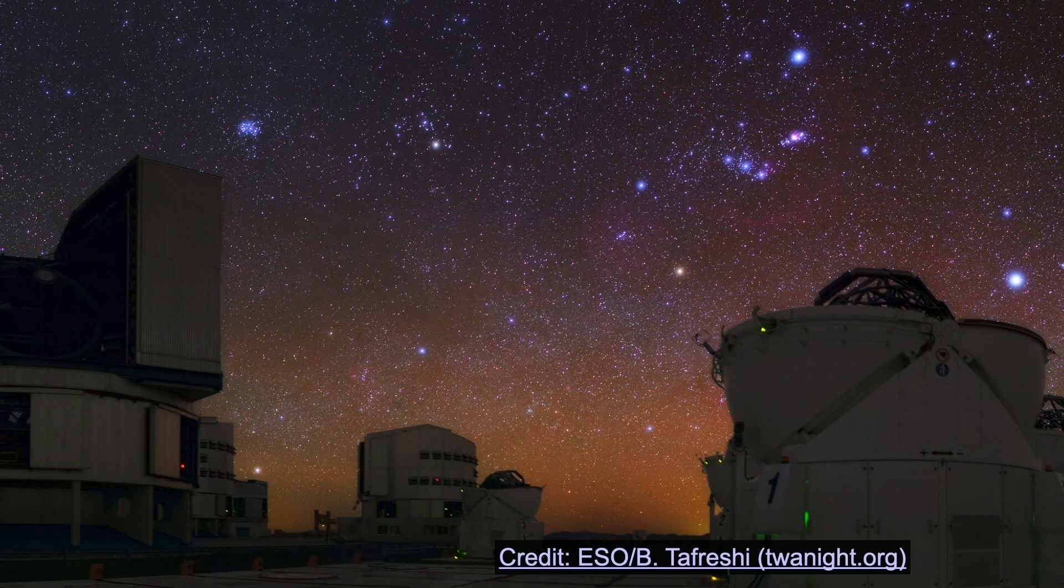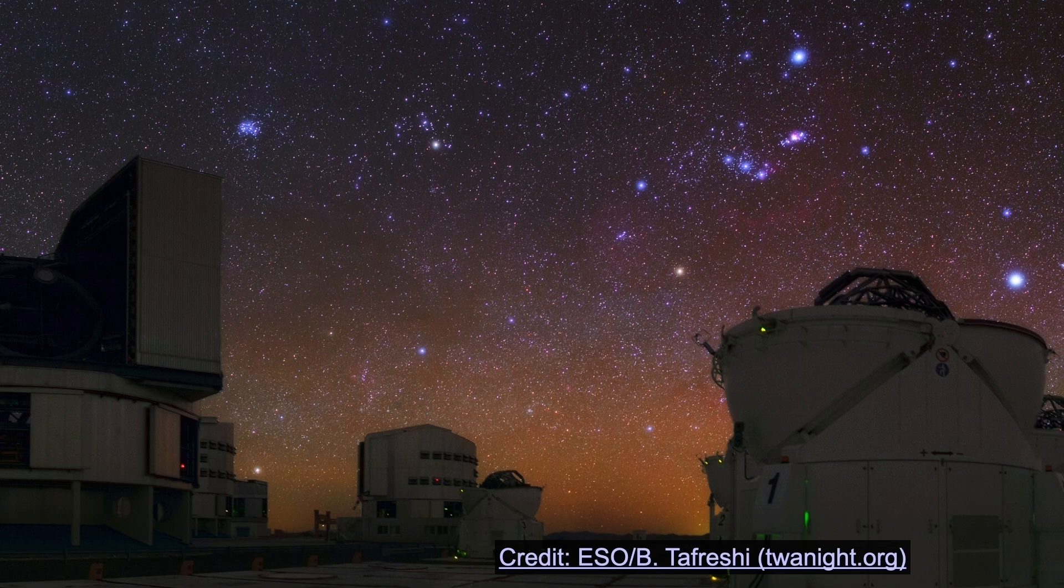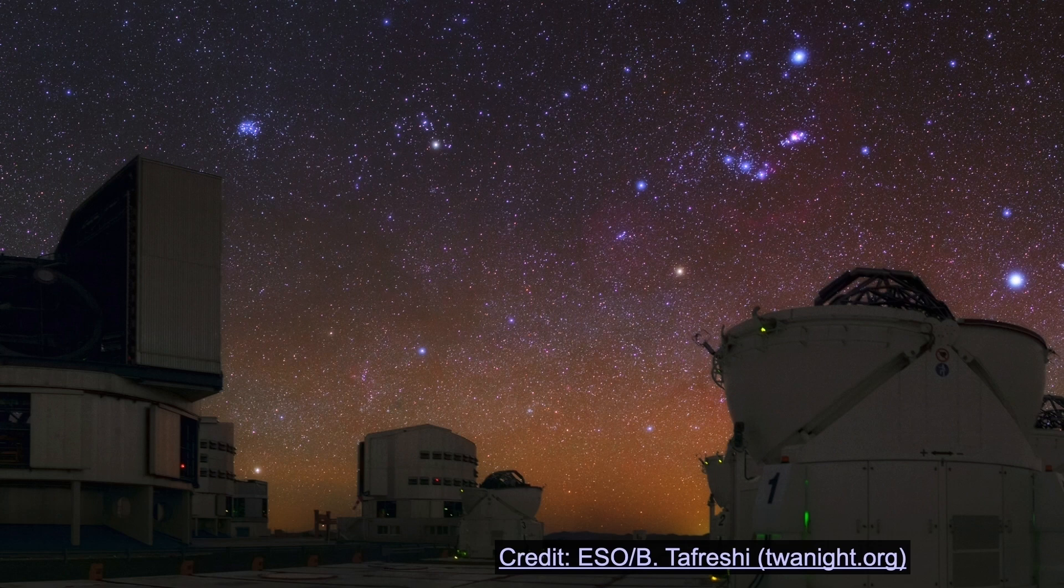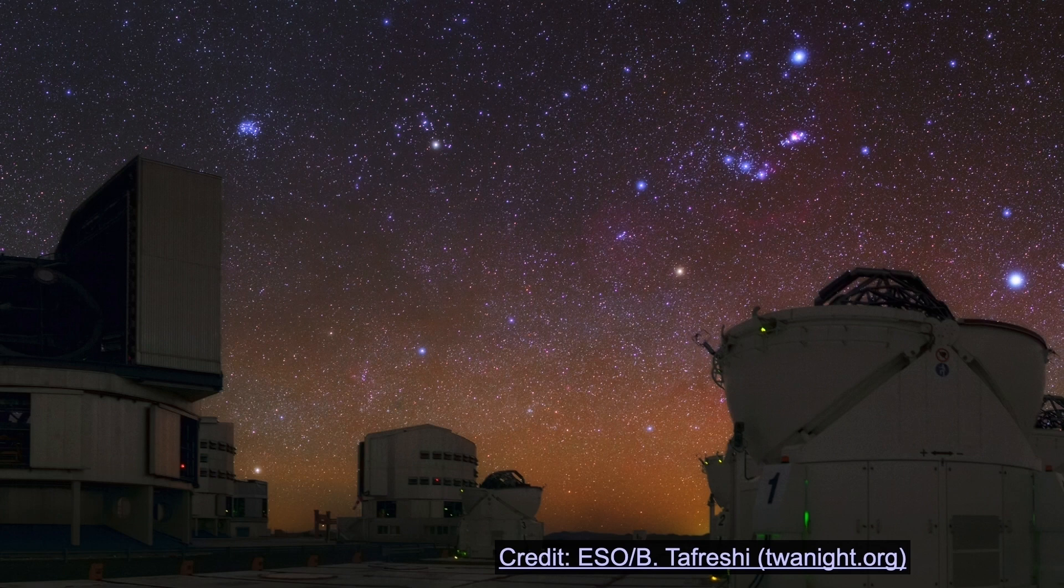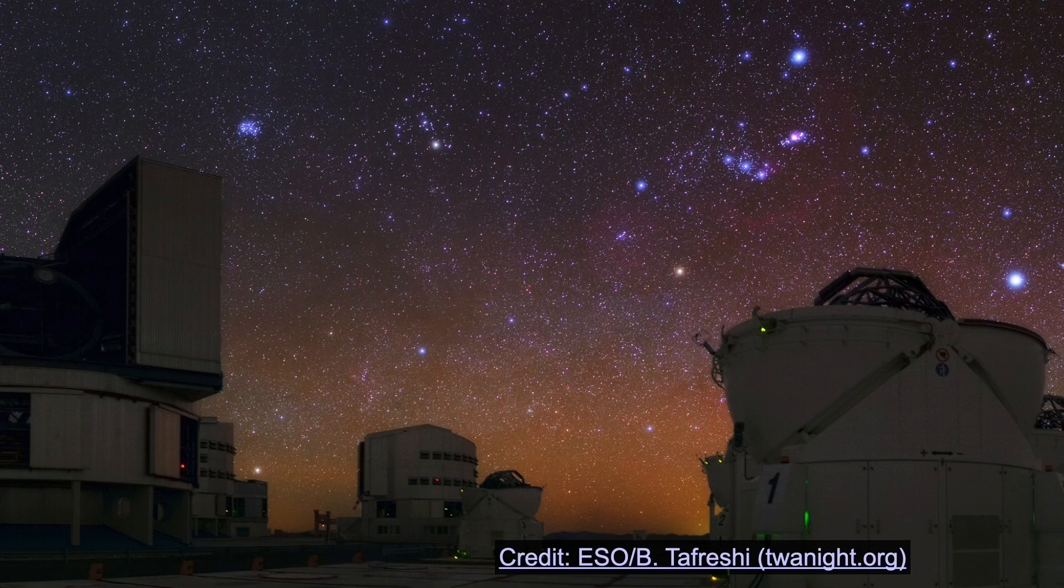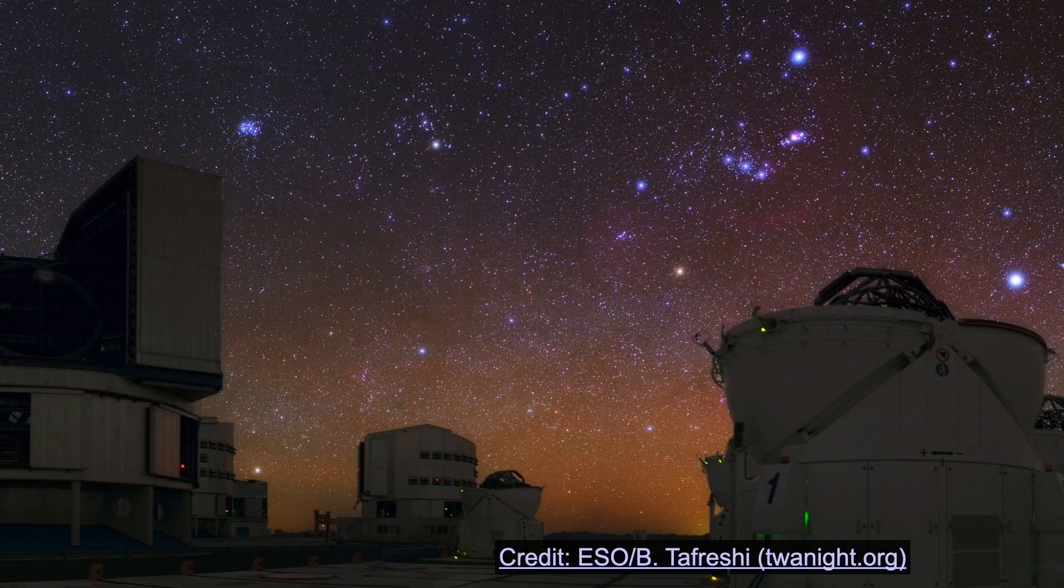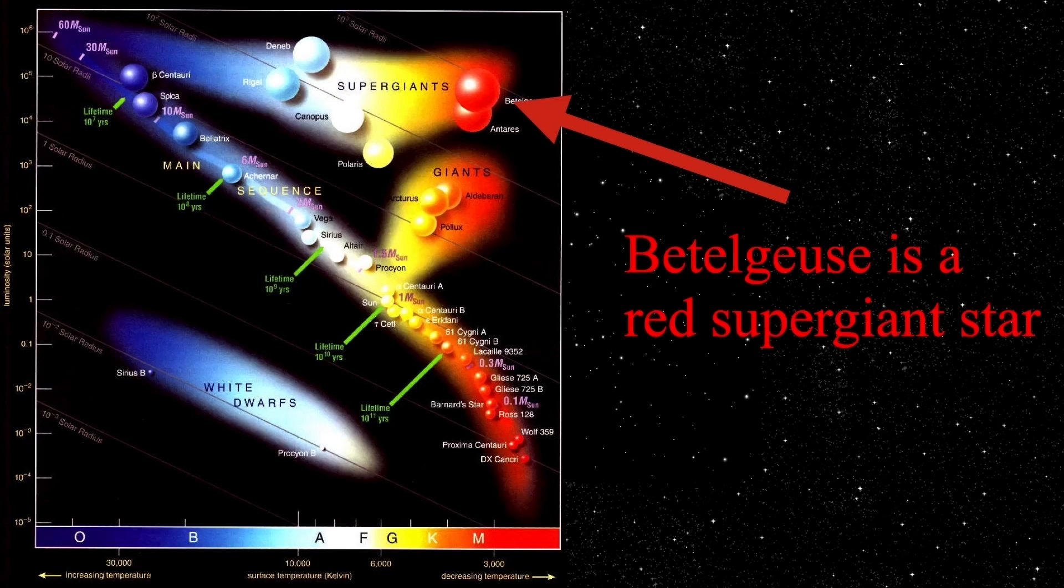And this is from Babak Tafreshi from theworldatnight.org. He likes going to the European Southern Observatory and taking some amazing photographs of the southern sky. And we see right off on the right-hand telescope there, just above it and to the left is a reddish star. And that reddish star is Betelgeuse. And if it looks kind of weird, it's because it's in the southern hemisphere. So Orion's upside down when seen from Chile. So that's kind of interesting. This is from the European Southern Observatory, taken by Babak Tafrishi. Anyway, Betelgeuse is a great example of what we're going to be talking about.